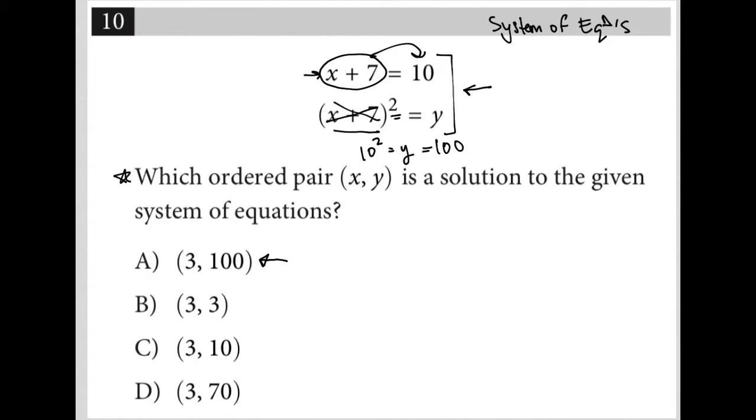And obviously, if x plus 7 equals 10, then x must be 3. So x equals 3, y equals 100. This is (3, 100). So A is the correct answer.